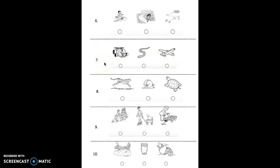Number eight. Which picture shows an animal that moves fast? Color in the circle under that picture. Pause and color now.